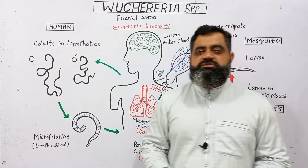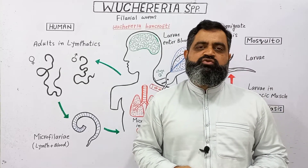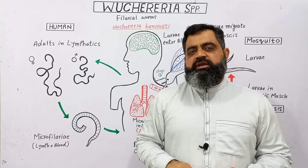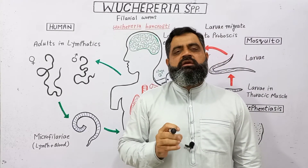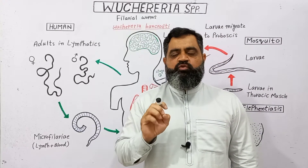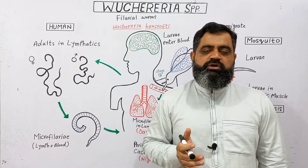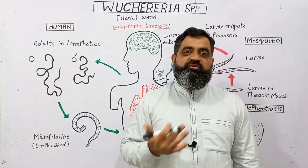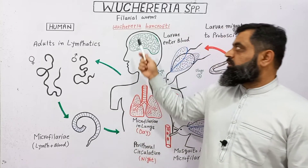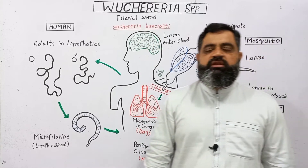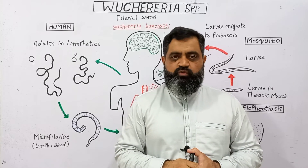Wuchereria species are specialized worms which belong to Phylum Nematoda and they are usually known as filarial worms. Filarial means thread, so these are very thin worms present as parasites in tropical areas of the world. These are known as filarial worms or thread worms. The most common example is Wuchereria bancrofti, which is usually found in tropical areas of Brazil, Malaysia, and other tropical countries of the world.